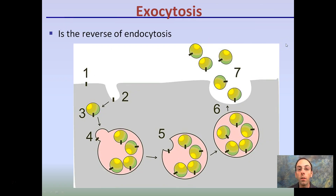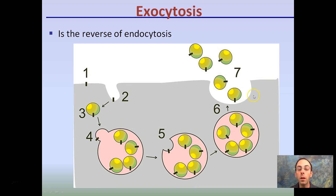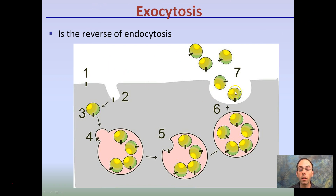The opposite process is exocytosis — it's the reverse of endocytosis. Instead of taking something in, it involves removing something from the cell. This could be waste, something the cell has in excess, or something another cell may need, such as a signal. Exocytosis isn't always associated with waste; it can release valuable signals into the extracellular fluid so that surrounding cells can receive them, which is one way cells communicate with each other.